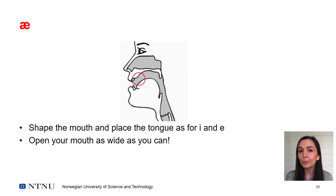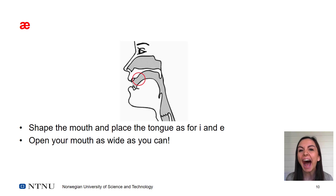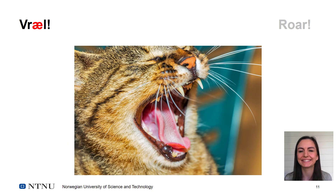Lastly, we have ä. Now shape your mouth as you did for i and e. Only now open your mouth as wide as you can. Ä. Really open it up. Ä. Dräl, ä.